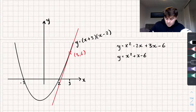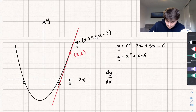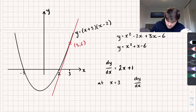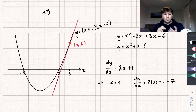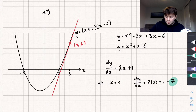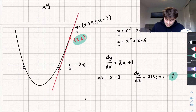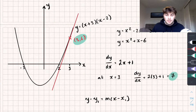We differentiate each term, so dy/dx equals 2x + 1. We want the gradient at the point x = 3, so at x = 3, dy/dx equals 2 times 3 plus 1, which is 7. So we've found the gradient of the curve, and therefore the gradient of the tangent is 7. We've also been given the coordinates of a point on the tangent, which are (3, 6), so we can use the equation of a straight line y − y₁ = m(x − x₁) to find the equation of the tangent.